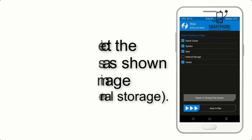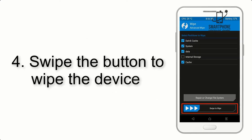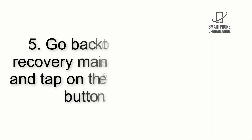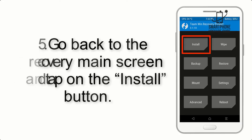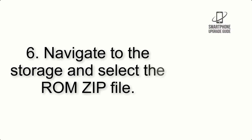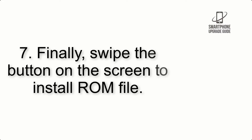Excluding internal storage. Step 4: swipe the button to wipe the device. Step 5: go back to the recovery main screen and tap on the Install button. Step 6: navigate to the storage and select the ROM zip file.